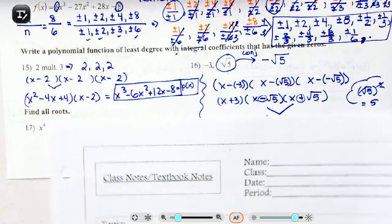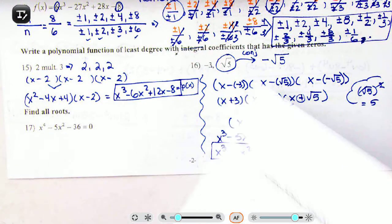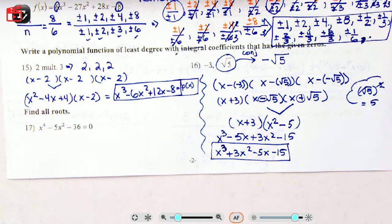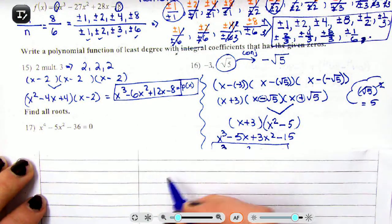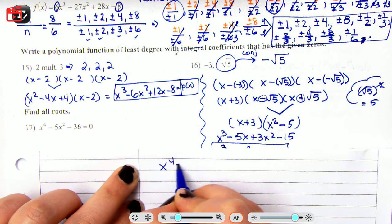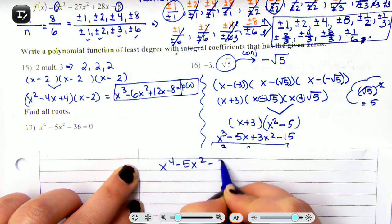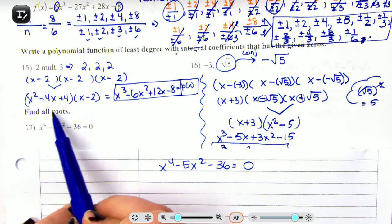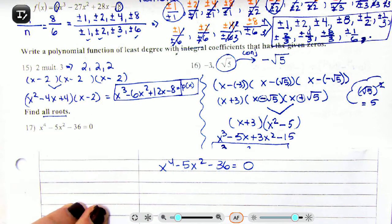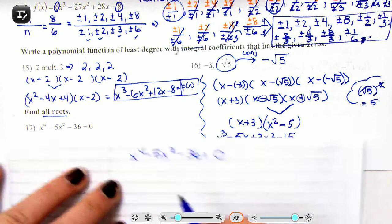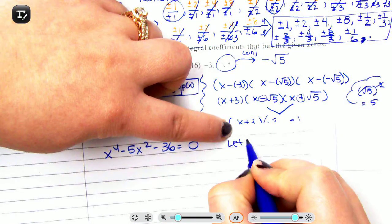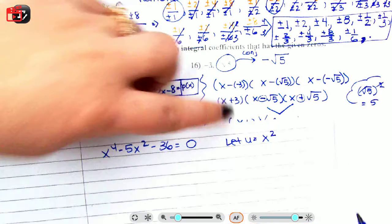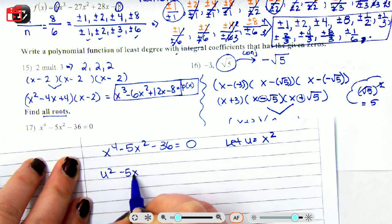I'm just going to rewrite my question here. So I have x⁴ - 5x² - 36 = 0. Now here it is: find all roots. Note that the word 'possible' is not in the question. If you don't have the 'possible' in your question, that means you actually have to find the roots that work. So step number one is I'm going to substitute. Let u = x², so I have u² - 5u - 36 = 0.